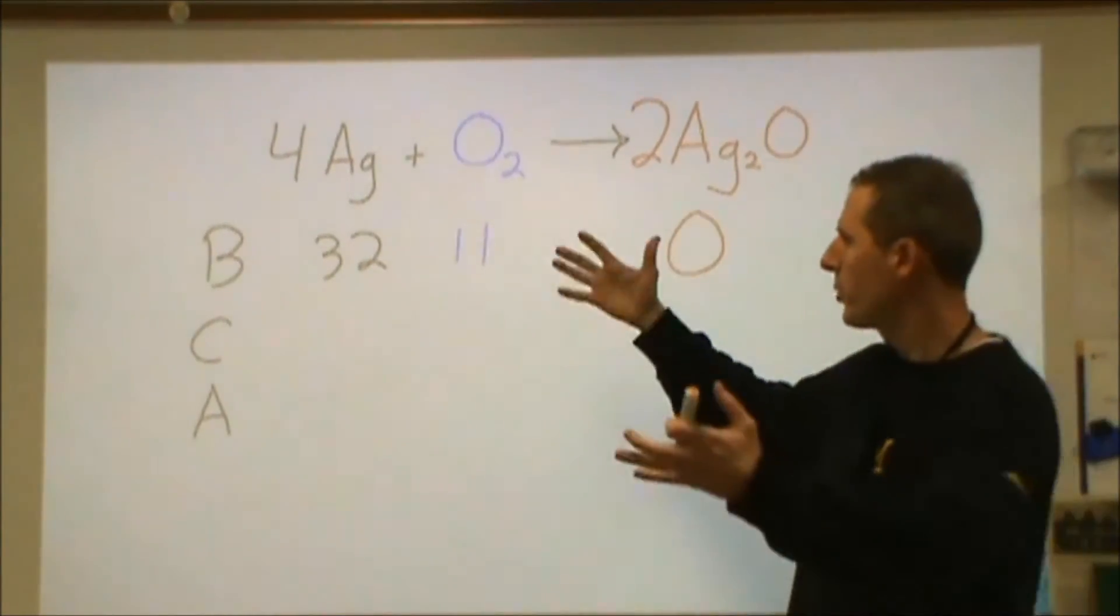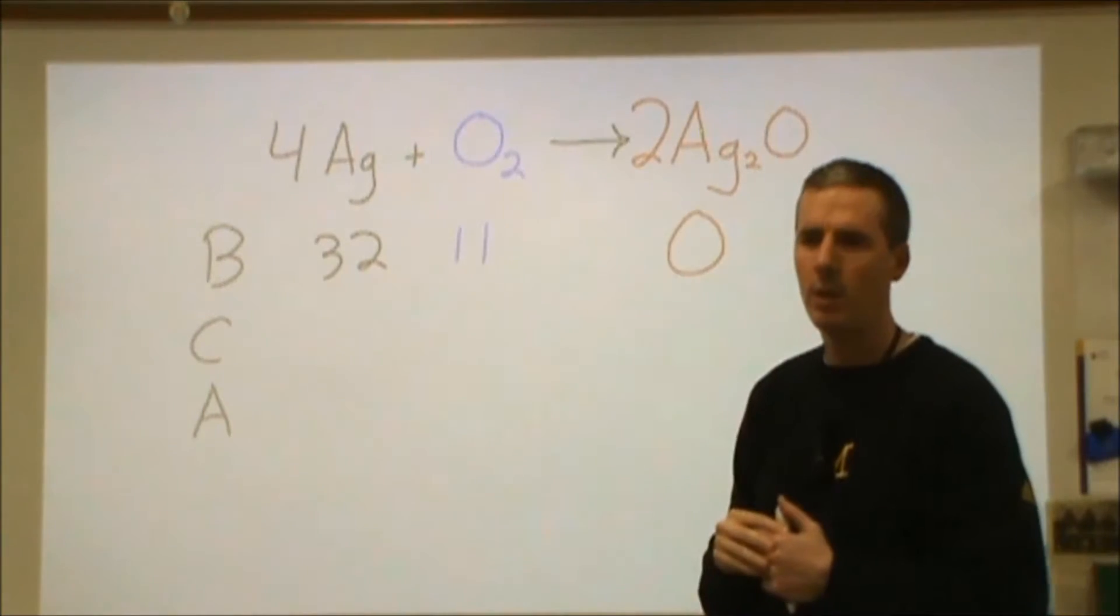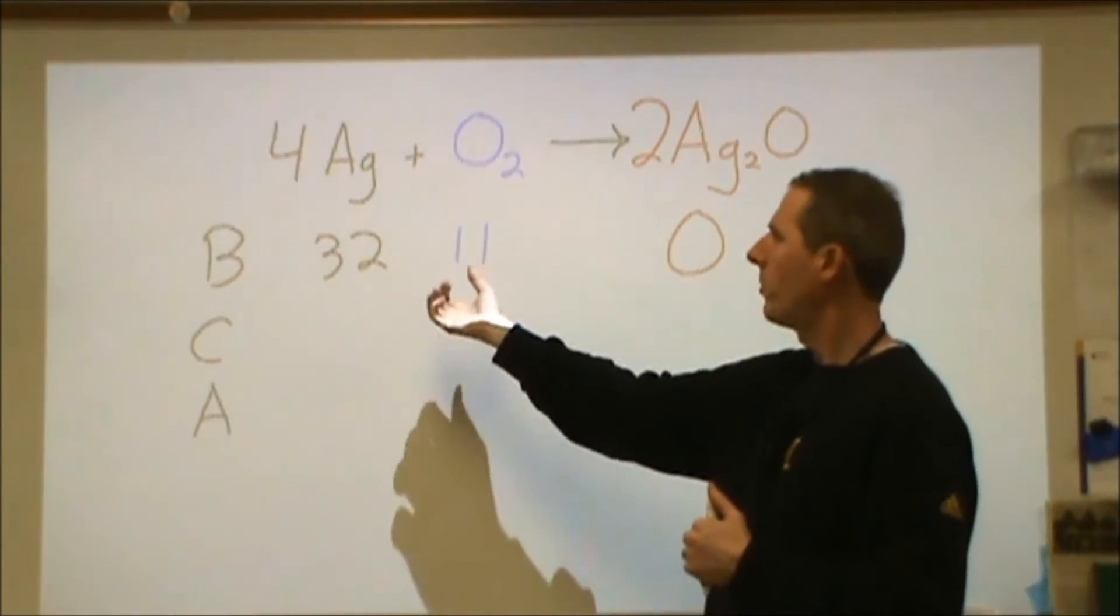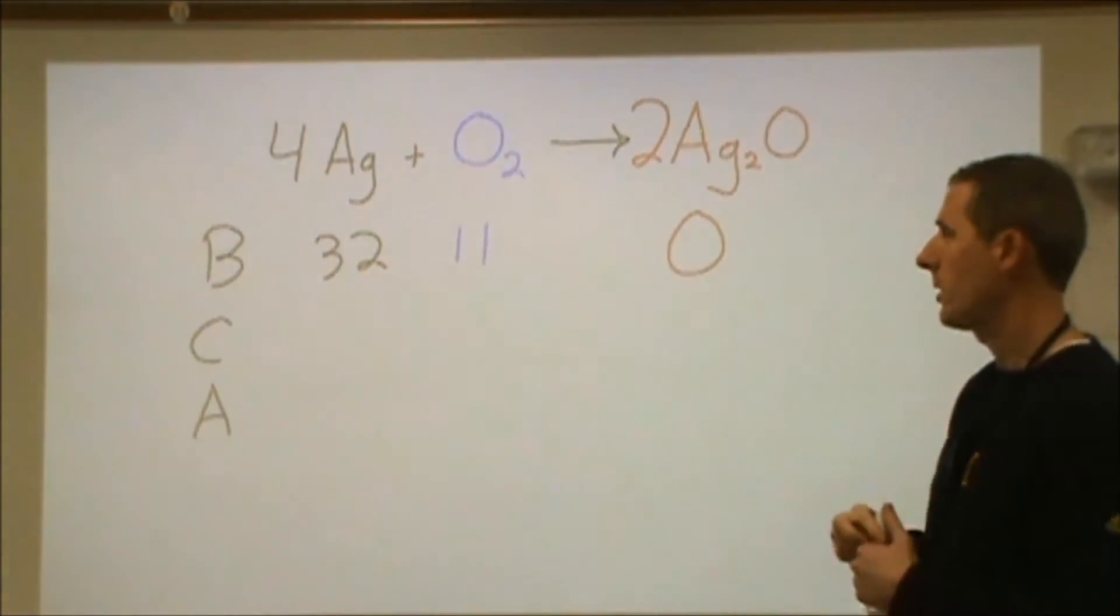So what we're doing is we've kind of contrived the system where we have a certain amount of silver metal and a certain amount of oxygen gas, and we don't know which one will be used up first. So we don't know whether we'll run out of silver forming silver oxide or whether we'll run out of oxygen as we form silver oxide.